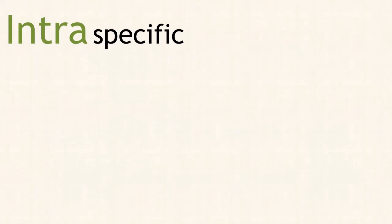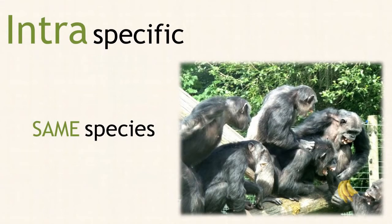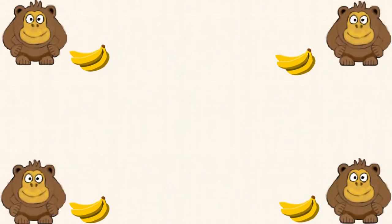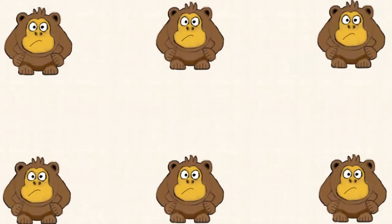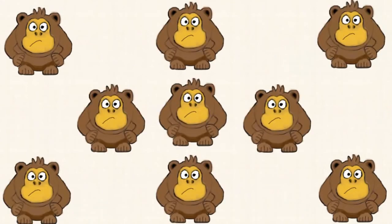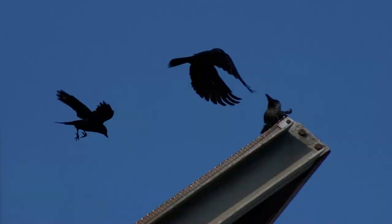Intraspecific interactions are the effects that individuals of the same species have on one another. For example, intraspecific competition is competition between members of the same species, like lots of chimps fighting over a piece of fruit — these members of the same species are competing for the same resources. Or, the intraspecific competition could be between two male blackbirds fighting over a female.